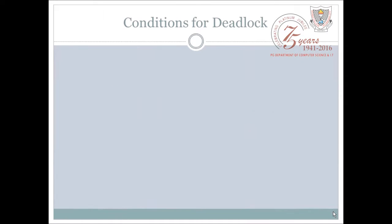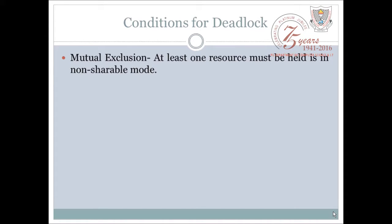There are four conditions for a deadlock to occur in a system. सबसे पहली condition है mutual exclusion। Mutual exclusion का मतलब है at least एक resource ऐसी होनी चाहिए जो non-shareable mode में हो, मतलब कि एक ही process को एक time पर एक resource use करने की permission होनी चाहिए। अगर अलग process आती है उस resource के लिए तो उस requesting process को delay करना चाहिए जब तक वो resource release नहीं कर देती। So mutual exclusion should hold in the system.